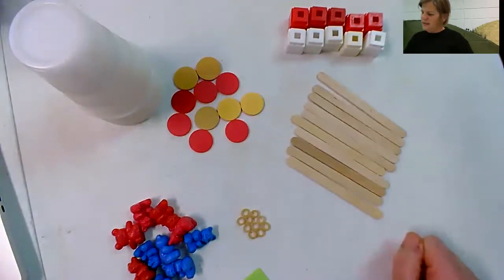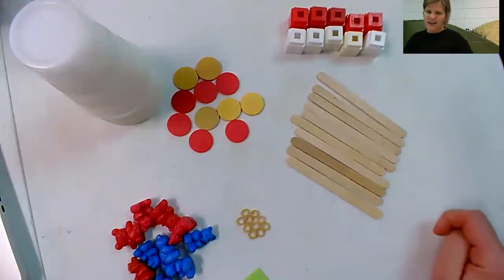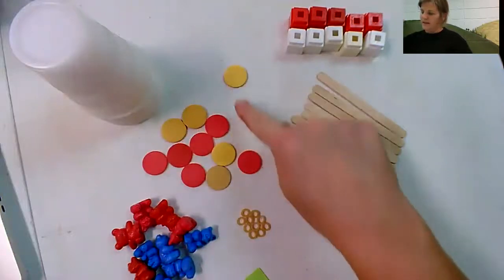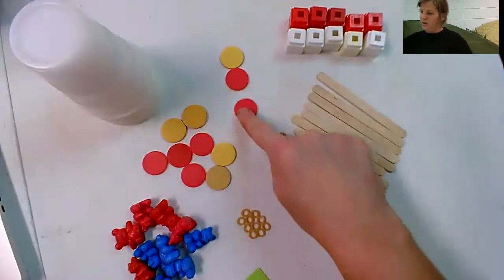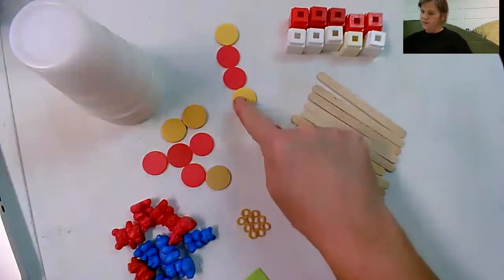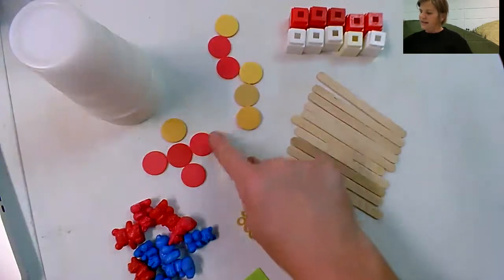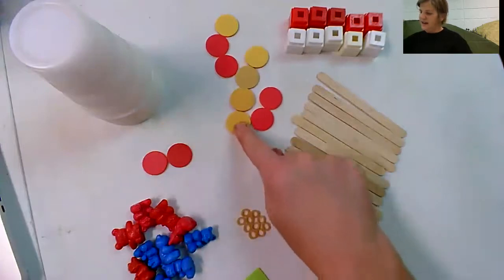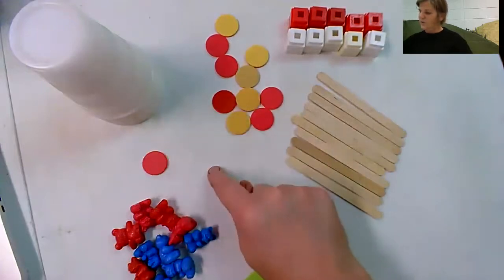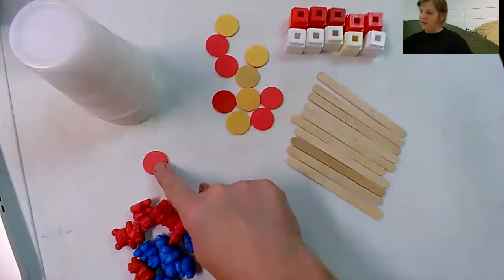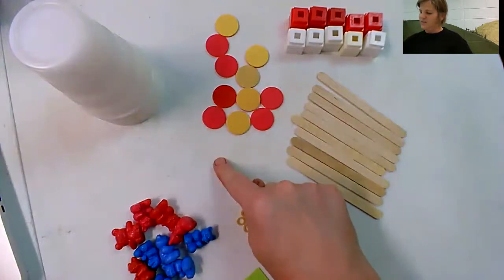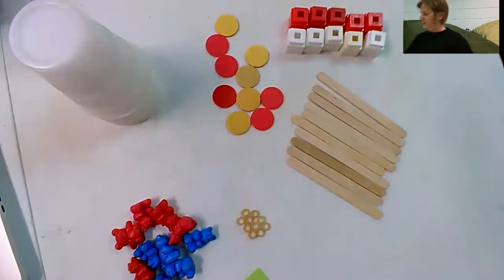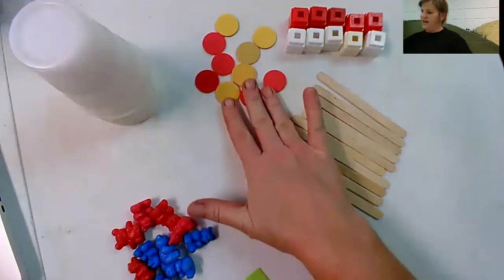Do you notice that every time I touch an item, I say a number? Watch this. One, two, three, four, five, six, seven, eight, nine, 10. What's the next number? 11. But I just want 10. I'm going to take away one chip. Now I have 10 chips.